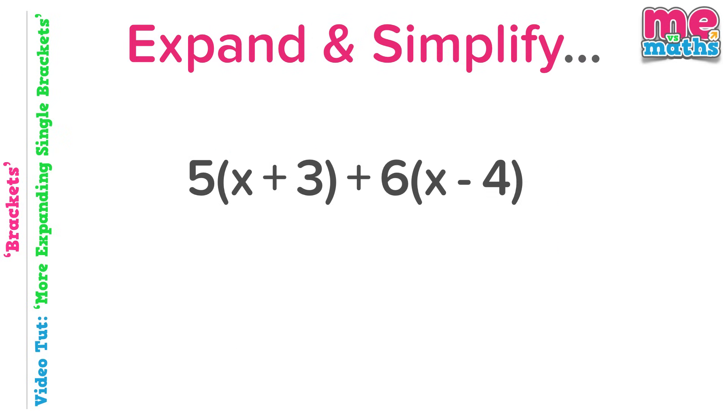Our next example, and here we notice a negative sign in our second bracket, so we'll need to be just a little bit wary. The first bracket to expand though is simple enough. Five times x is 5x, and five times three is fifteen or plus fifteen.